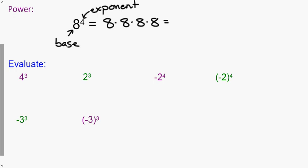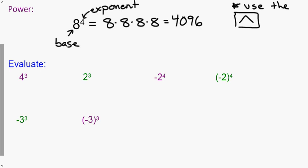We don't want to hammer keys on our calculator going 8 times 8 times 8 times 8. We can do that if it's a small exponent, but for a larger one we want to use the caret key — it looks like an up arrow, right above the divided-by symbol on your TI graphing calculators. So for 4 to the 3rd, you simply enter 4 caret 3 and get 64. Pause the video and try the remaining five problems.